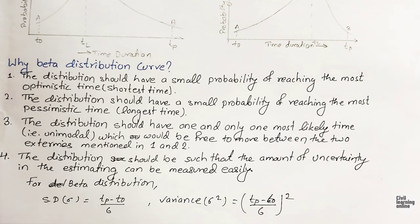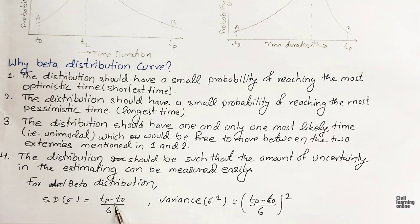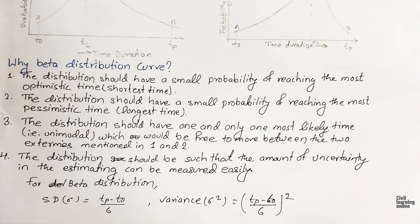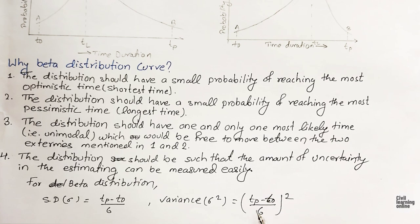There are two formulas for finding standard deviation and variance in beta distribution curve. Standard deviation sigma equals (tP minus t-naught) divided by 6, where tP is pessimistic time and t-naught is optimistic time. Variance is simply the square of standard deviation, so it is (tP minus t-naught) divided by 6, whole squared. You can either find standard deviation first and then square it, or directly apply the formula.